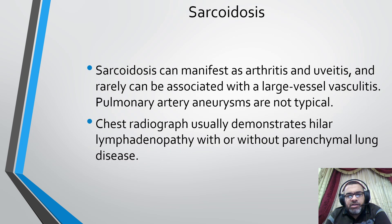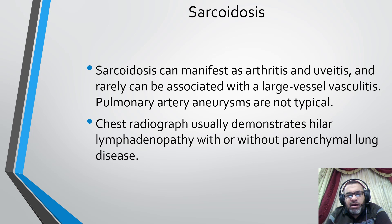Another differential diagnosis is sarcoidosis. Sarcoidosis can manifest as arthritis and uveitis and rarely can be associated with large vessel vasculitis. However, pulmonary artery aneurysms are not typical for sarcoidosis; chest radiograph usually demonstrates hilar lymphadenopathy with or without parenchymal lung disease. Therefore, this differential diagnosis is also excluded.